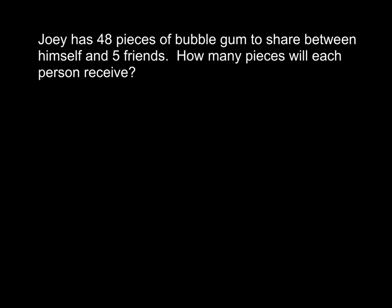Let's take a look at this one. Joey has 48 pieces of bubblegum to share between himself and five friends. So we know he has 48 pieces and he's going to share it between himself and five friends — that means six people total. How many pieces will each person receive? In this one we know how many groups there are — six, because there are six people — and we know the total: 48 pieces of bubblegum. What we are looking for is the amount in each group.